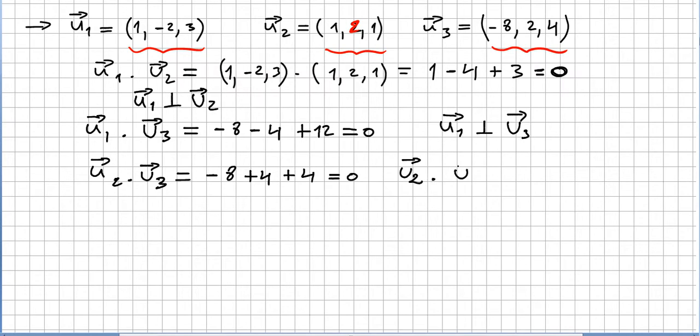And this is, u2 is also orthogonal to u3. So the vectors, they can be, for instance, like this. So these three vectors, they are all orthogonal to each other. This one to this one, this one to this one, and this one to this one.